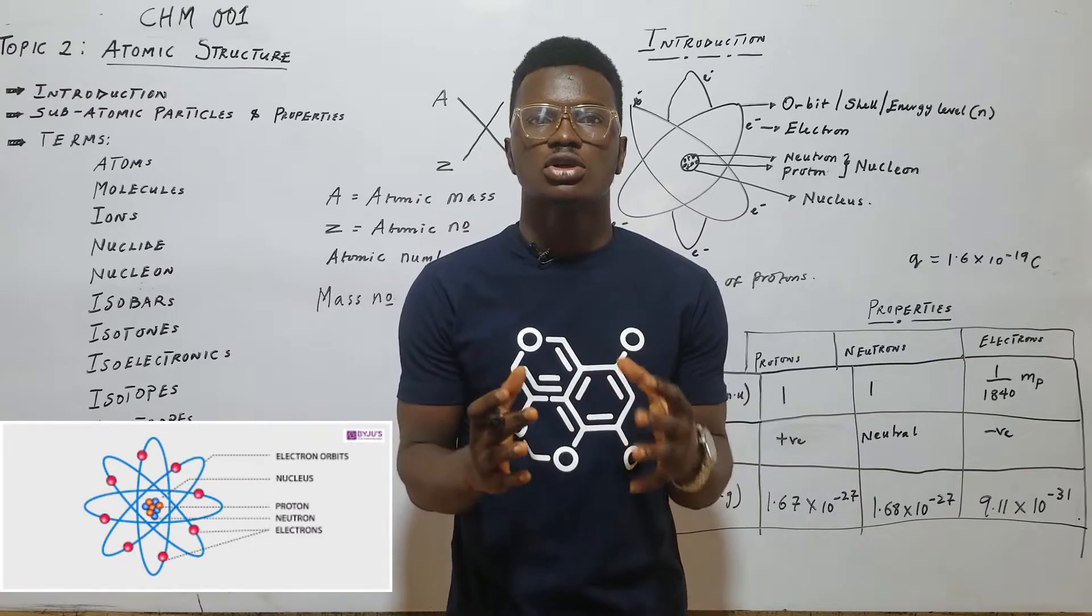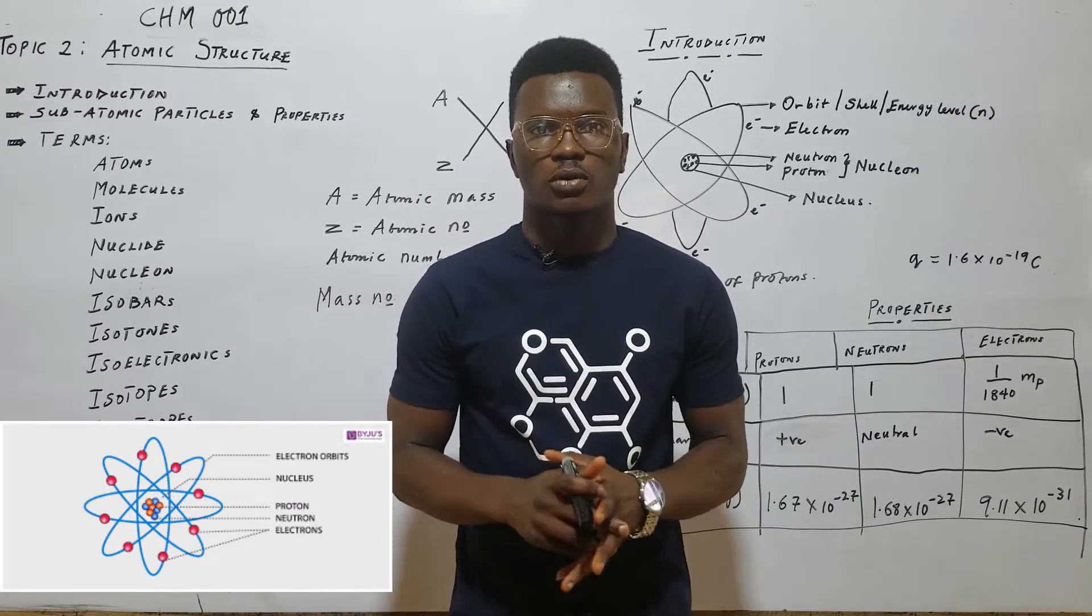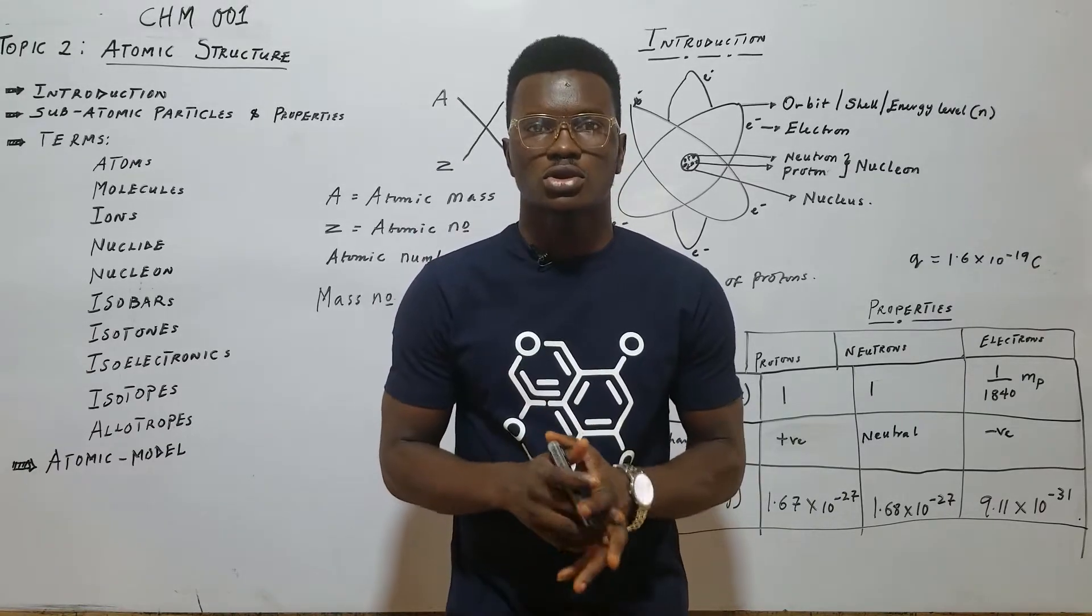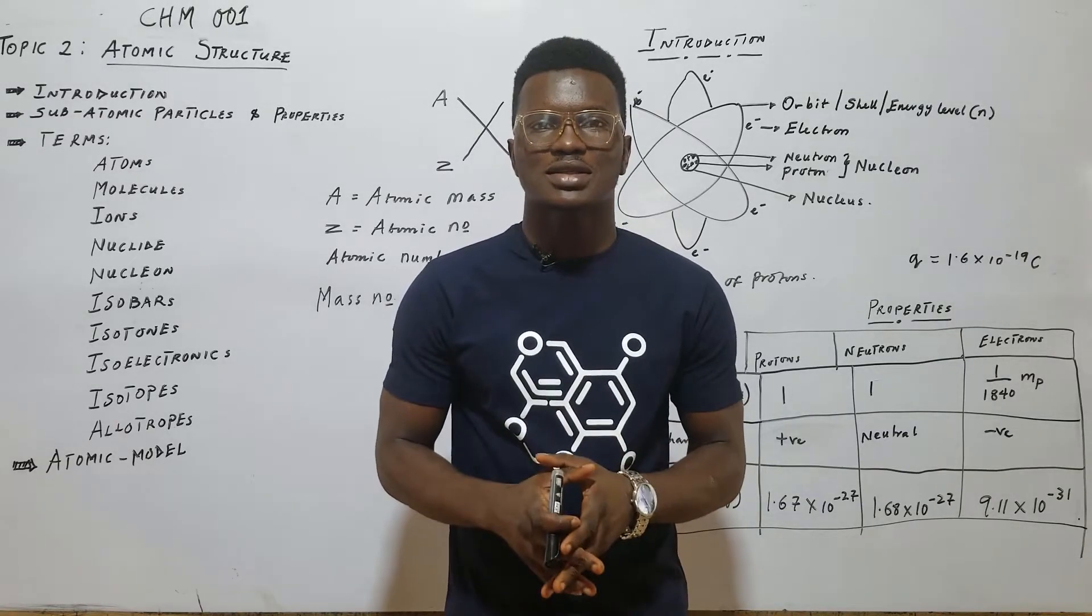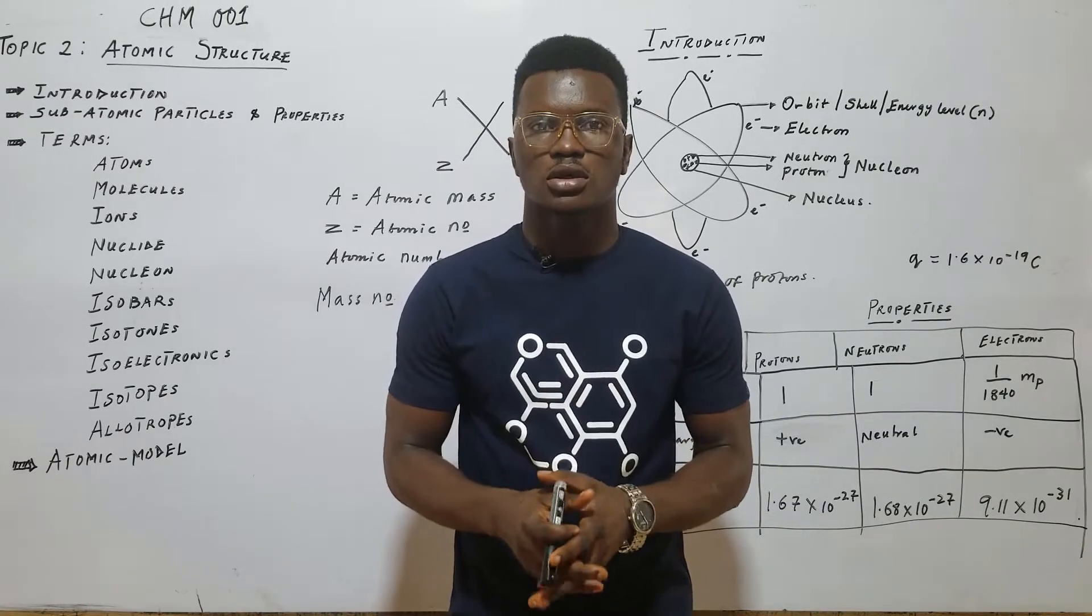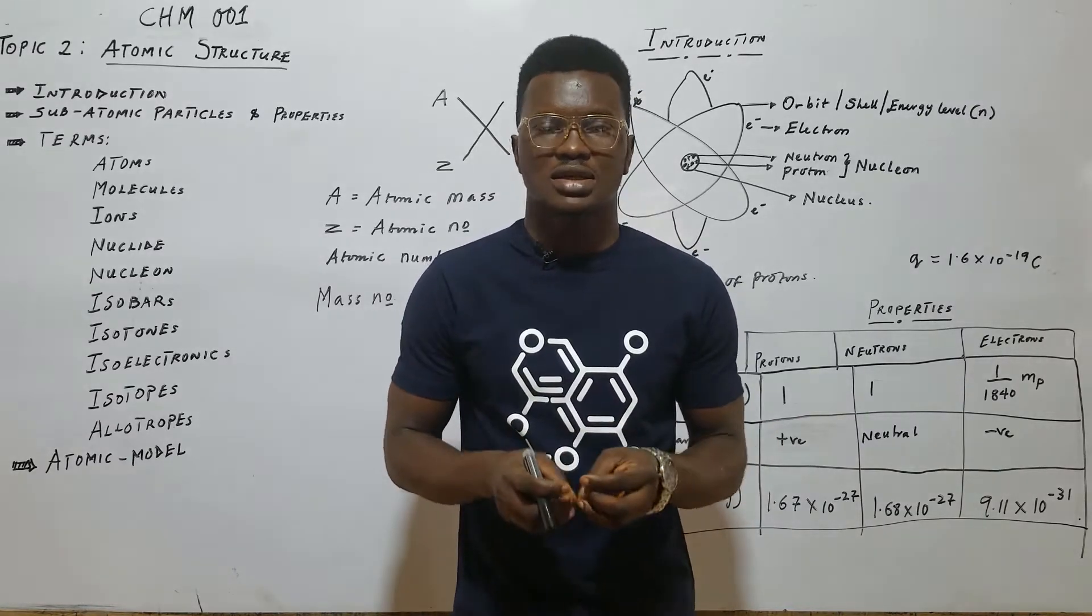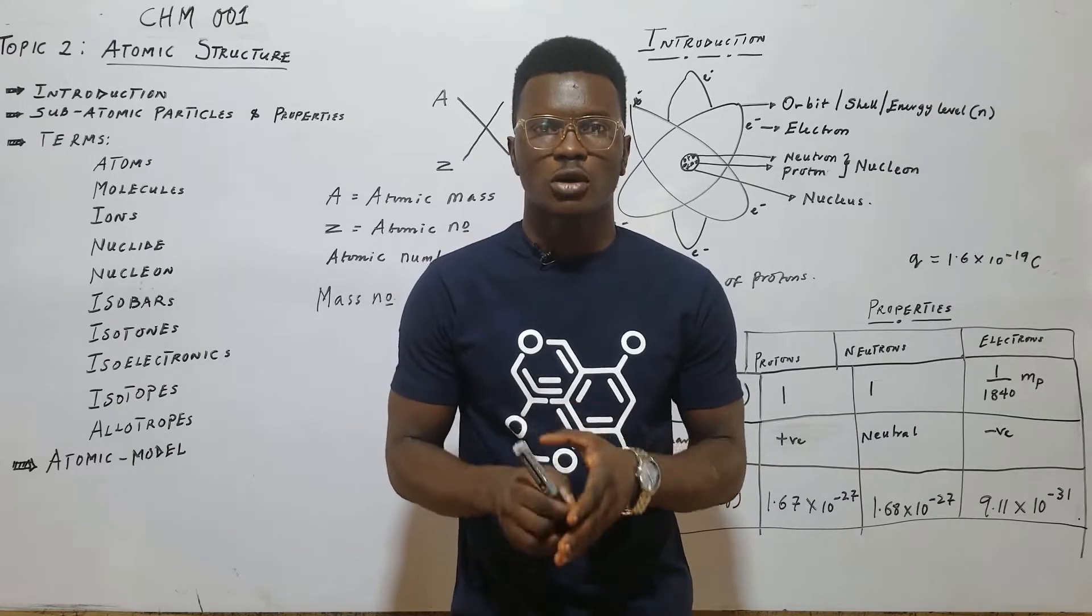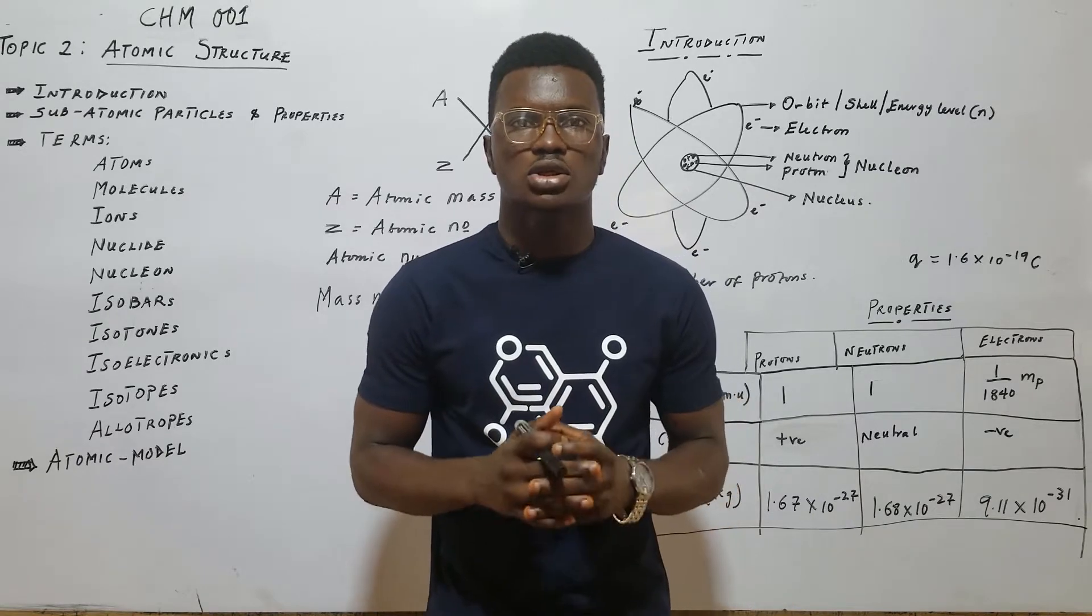We want to look at the structure of the atom, the composition of the atom. When we're talking about matter and some theories of atomic structure, we said atom is the smallest part of an element that can take part in a chemical reaction. But we found out that this atom that we call the smallest is still made up of some particles, which we call the subatomic particles. These particles are the protons, the neutrons, and the electrons.